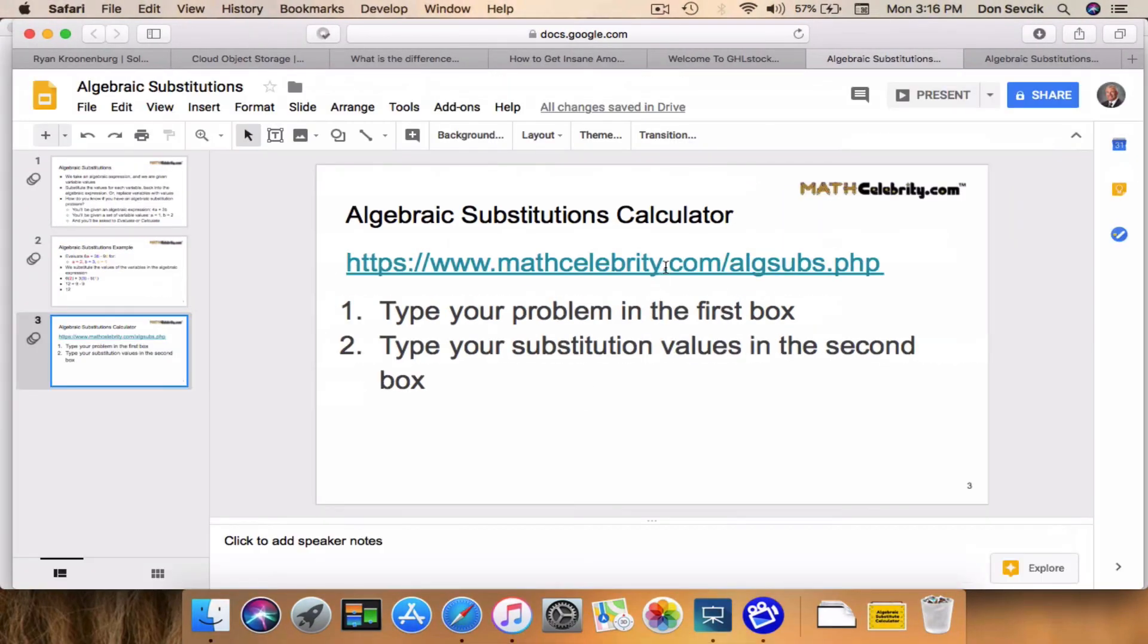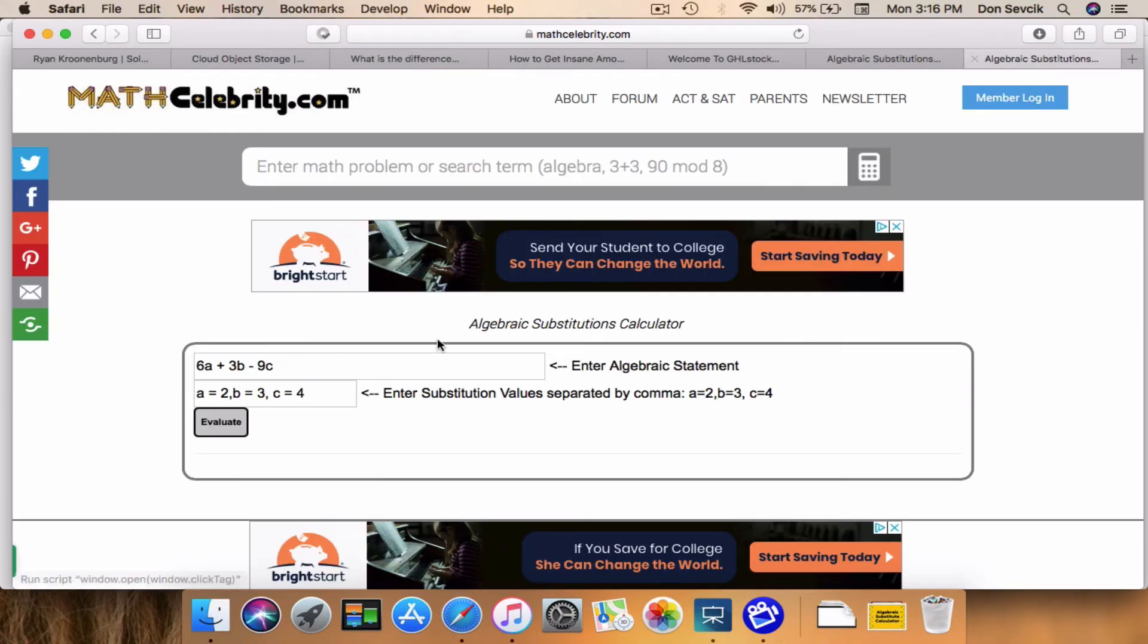So we're going to go to this link here, which is right here. You type your algebraic expression in this box, you type your substitution variable values in this box, and you want to separate each by a comma, and when you're ready, hit evaluate.